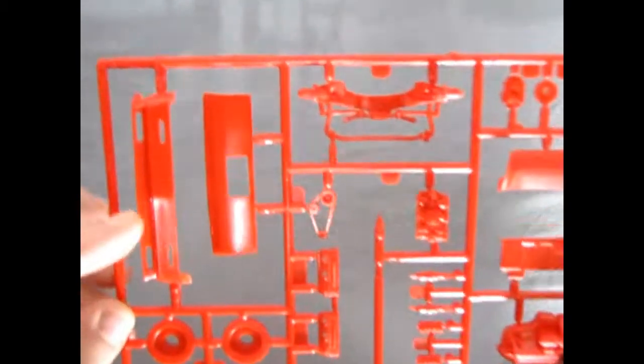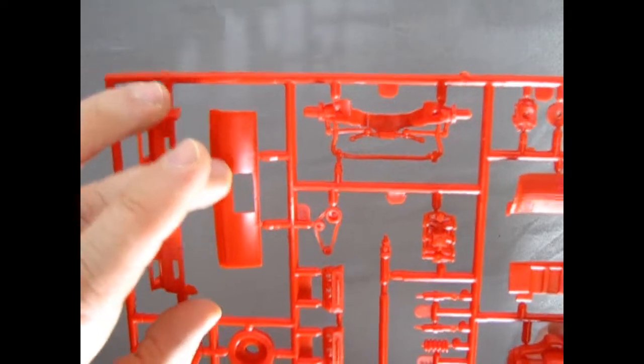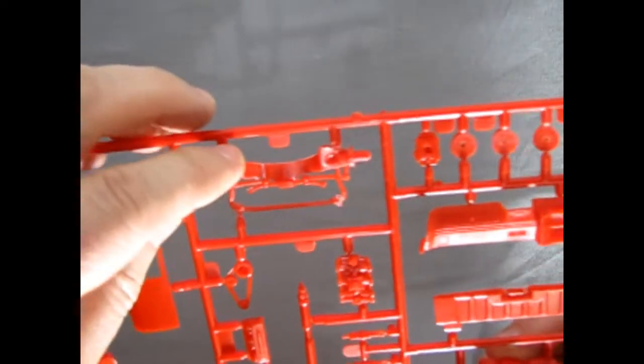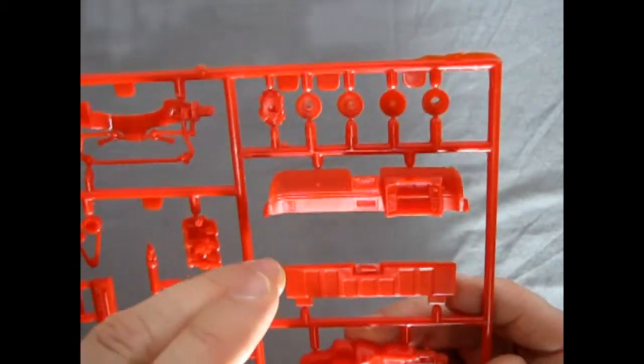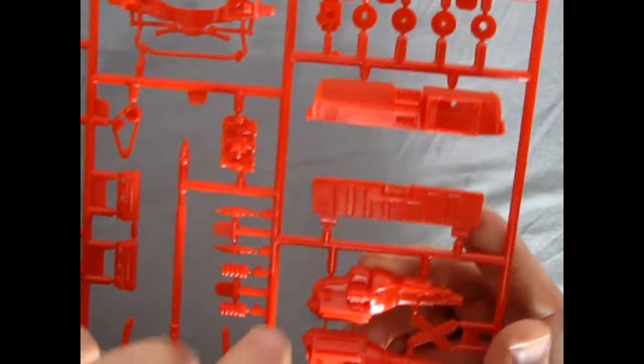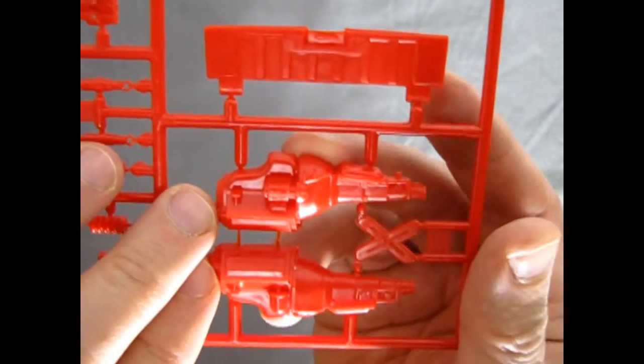Our next parts tree includes our front air dam, the outer portion of our rear tailgate, the front crossover member, the carburetor, our wheel retainer clips, the dashboard, the inner piece of our tailgate, the very beautiful Chevy V6 in here.